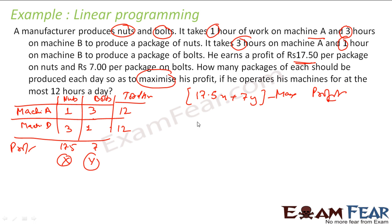What other constraints do I have? First, X has to be greater than or equal to 0. Y has to be greater than or equal to 0. He cannot produce negative nuts and negative bolts.